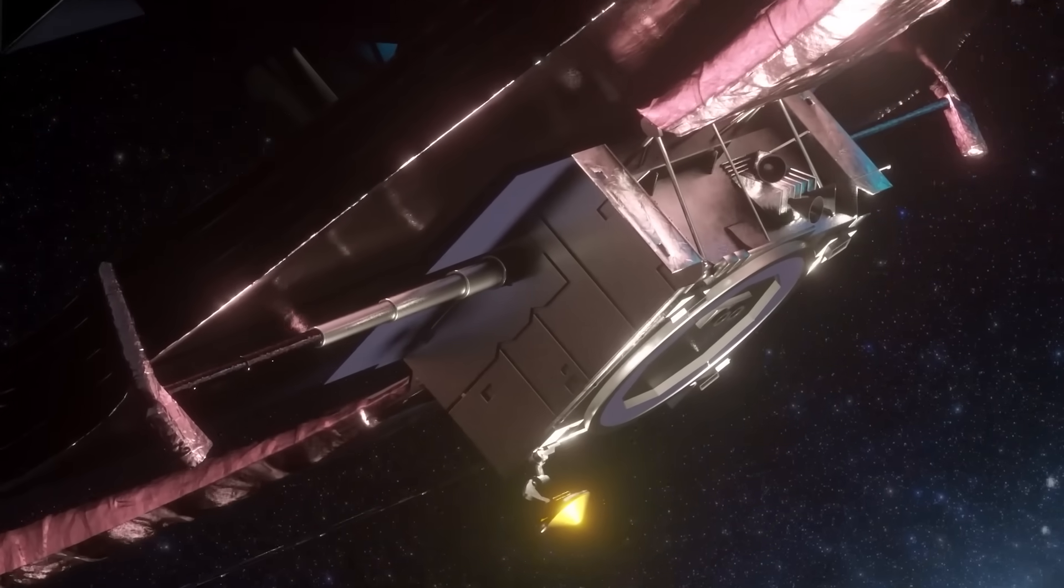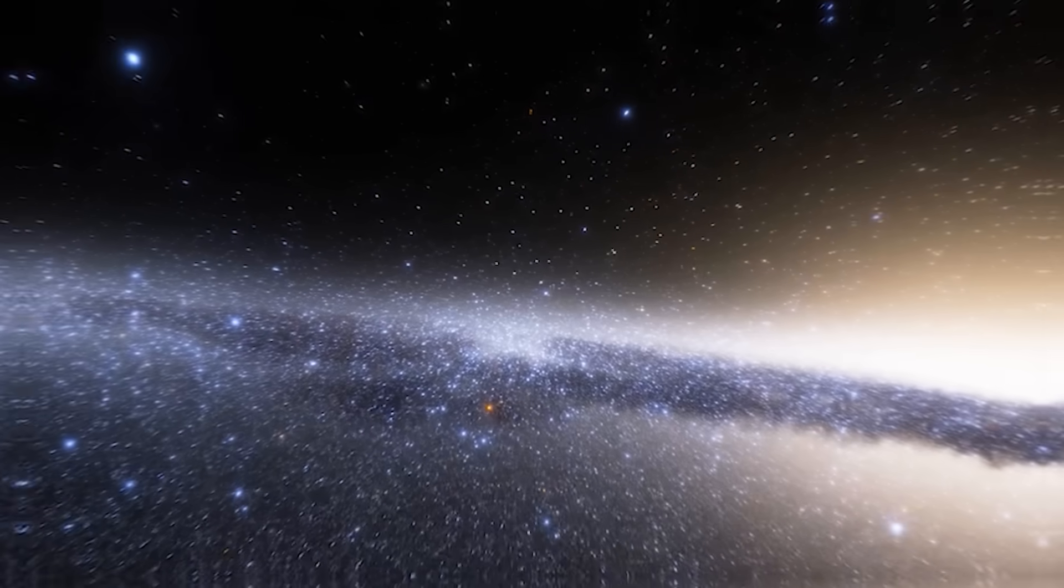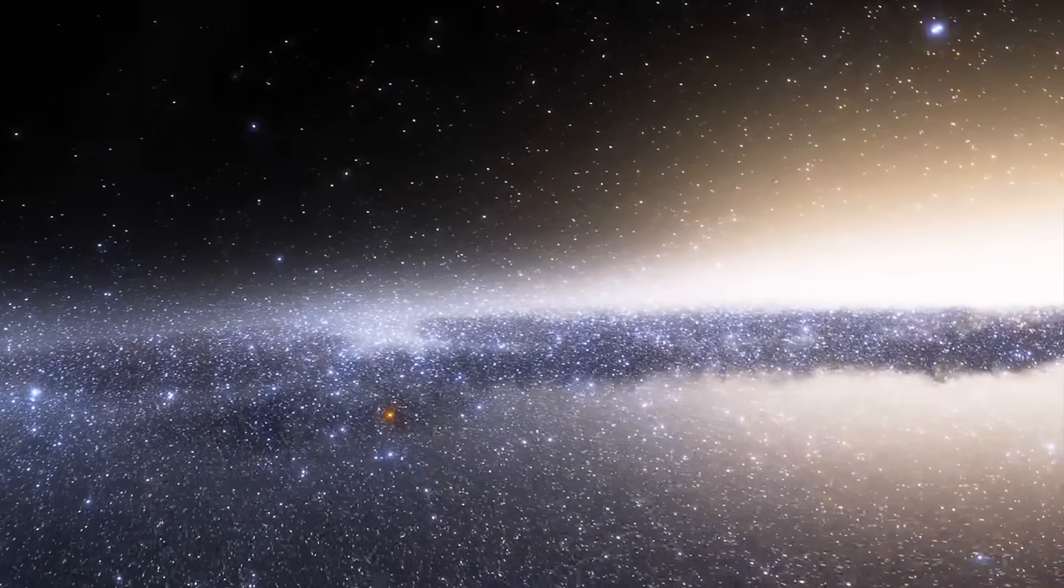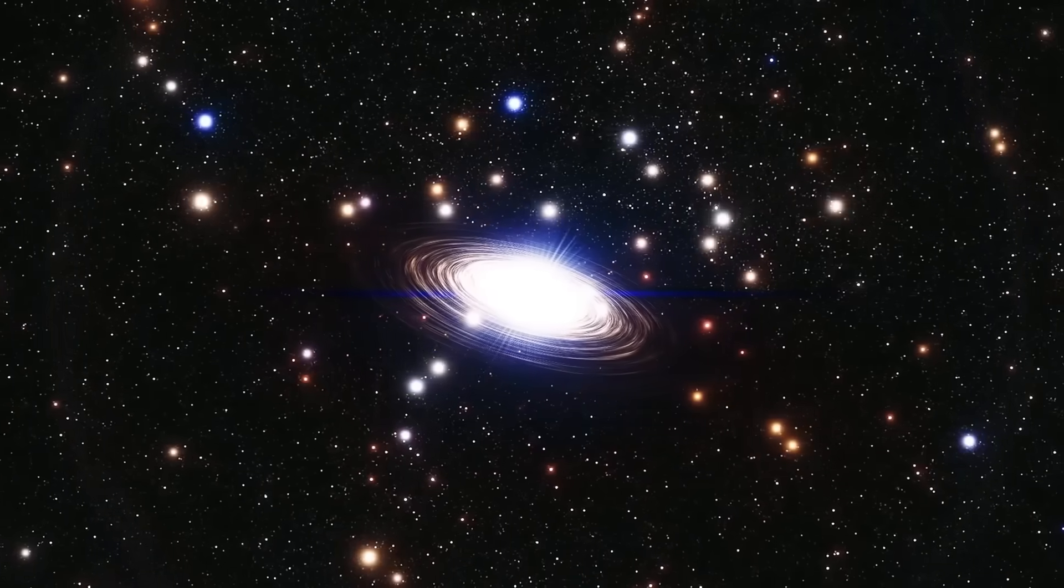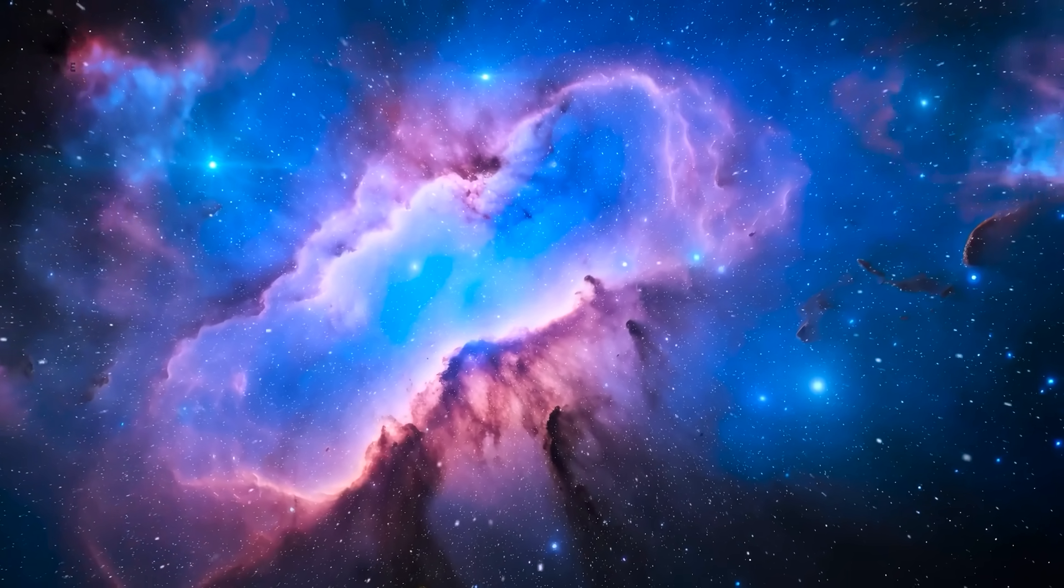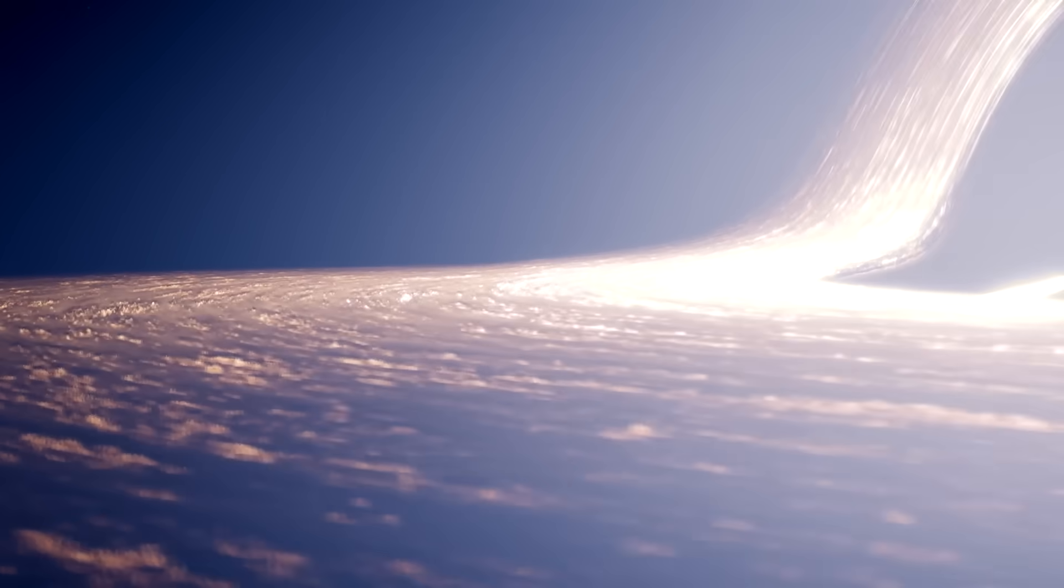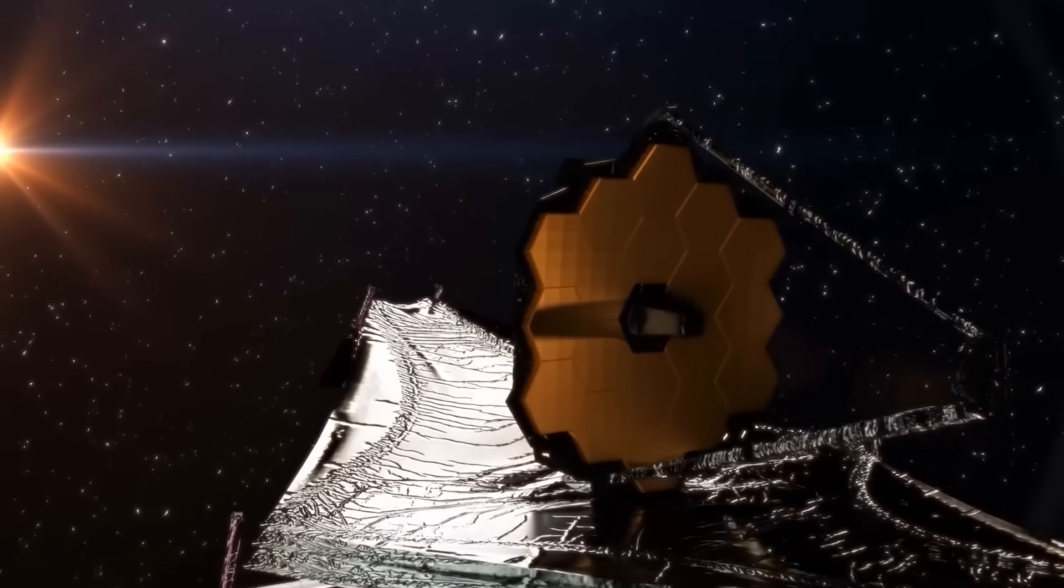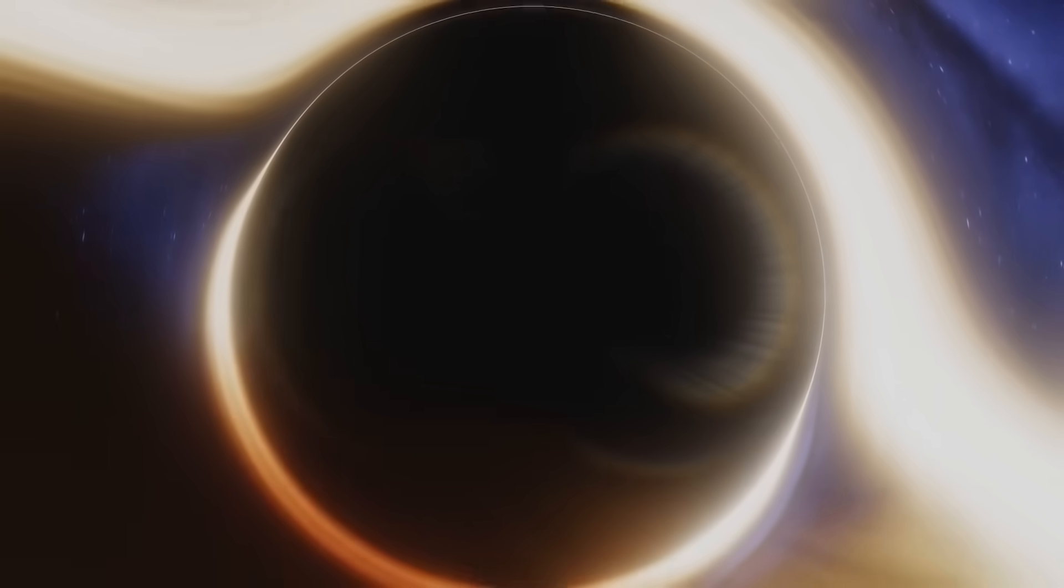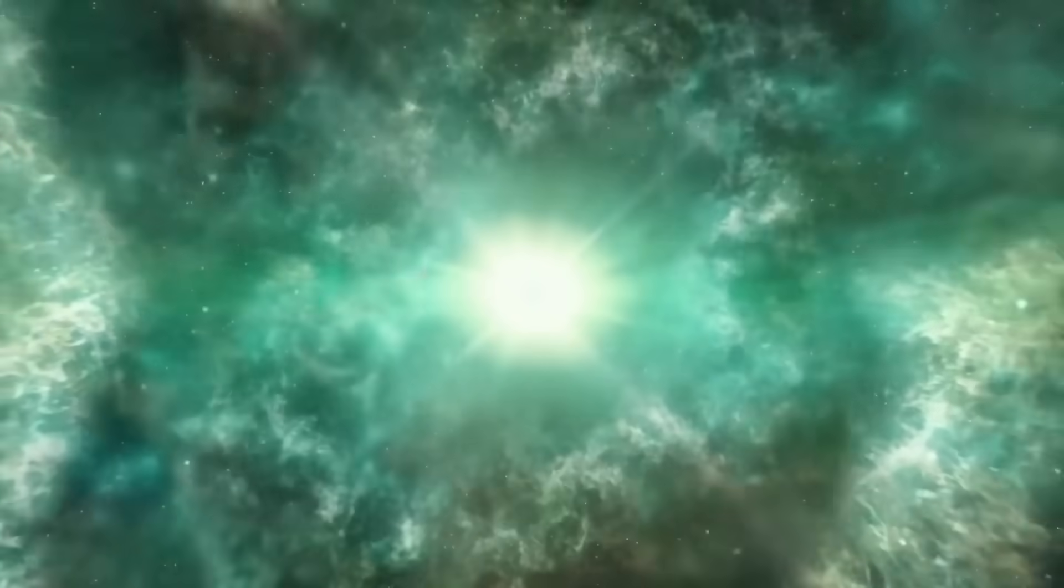The James Webb Space Telescope was built to reveal the past, to peel back the layers of time and show us what the universe looked like billions of years ago. But in doing so, it may have shown us something even deeper, that we are not just observers of the cosmos. We are part of a system far older, more precise, and more deliberate than we ever imagined. Galaxies that shouldn't exist. Planets that defy gravity. Signals without sources. Structures that mirror intelligence. This isn't random noise. This isn't just science fiction flirting with curiosity. These are data points, real, measurable, undeniable, that challenge the very fabric of our understanding. And if the patterns are real, if the pulses are deliberate, if the universe remembers, then we must confront the most unsettling possibility of all.